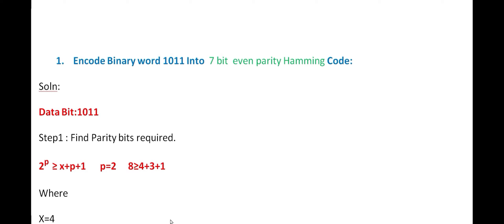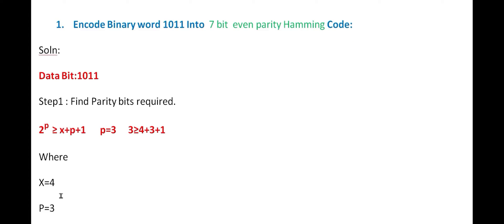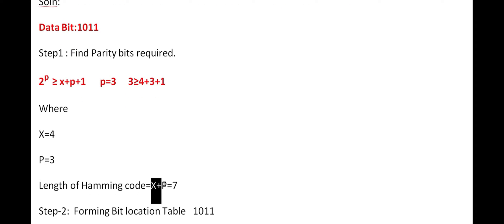Suppose we select p = 2: 2 power 2 is 4, and then length of x is 4, length of p is 2, so 4 + 2 = 6, and 6 + 1 = 7. So 4 is not greater than or equal to 7 — this is not possible. Hence we use p = 3. With p = 3, x = 4 (length of binary word), and number of parity bits = 3.